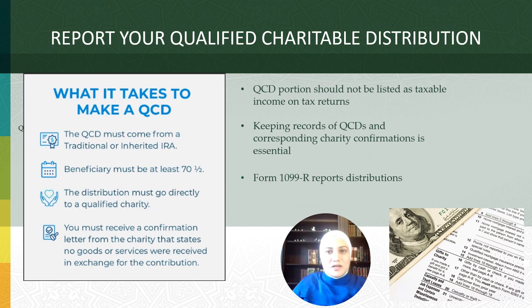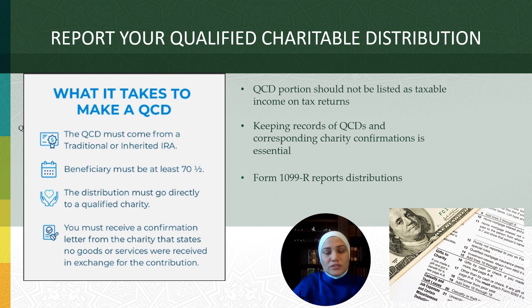This mistake applies to individuals over age 70 and a half and is one of the most common mistakes taxpayers make. It has to do with qualified charitable distributions, or QCDs. QCDs allow individuals 70 and a half or older to donate directly from their IRA or employer plan to a qualified charity. When you reach a certain age, you are required to take a minimum distribution amount, or RMD, from your IRA or qualified retirement account. If you do not need this money and you are charitably inclined, you can do a QCD and it will count toward fulfilling your RMD.